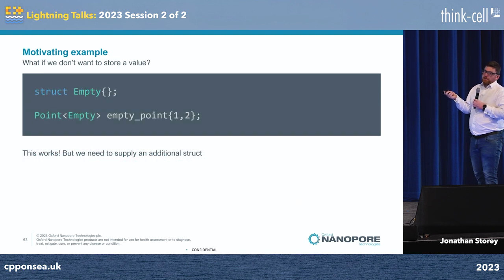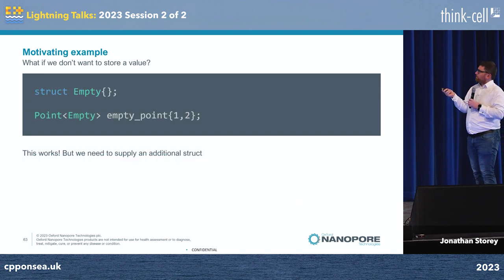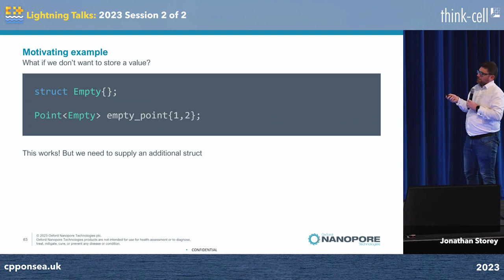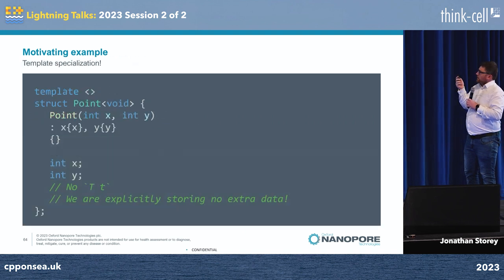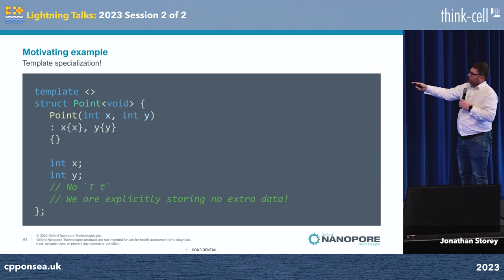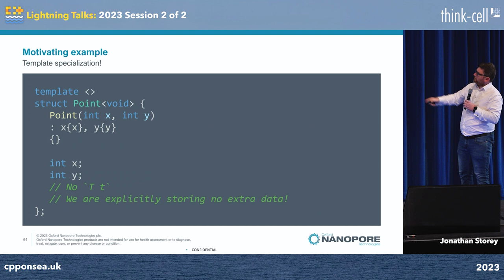We can make our own empty struct, and that works. But then the user has to write an additional struct, which isn't very good. So we make a template specialization: we've got point<void>, we've got lots of duplicated code and no T. It all works.